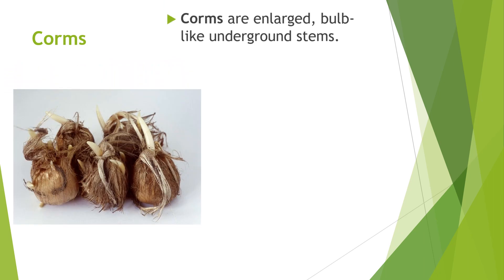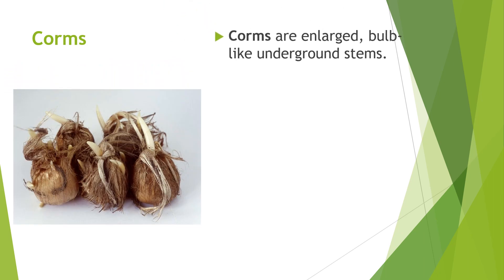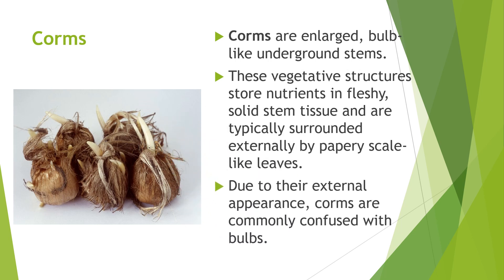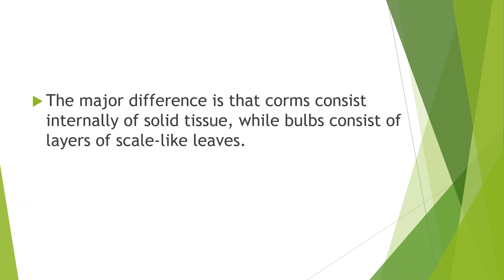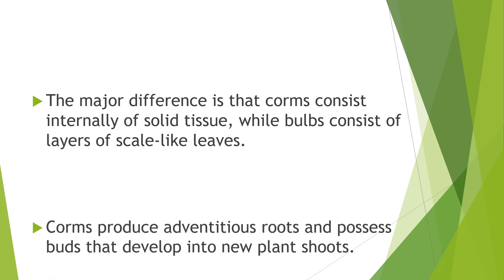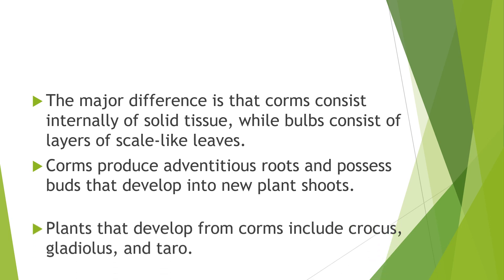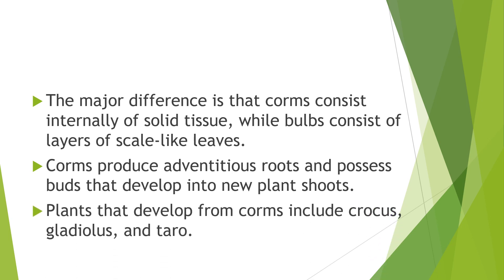Corms are enlarged, bulb-like underground stems. These vegetative structures store nutrients in fleshy, solid stem tissue and are typically surrounded externally by papery, scale-like leaves. Due to their external appearance, corms are commonly confused with bulbs. The major difference is that corms consist internally of solid tissue, while bulbs consist of layers of scale-like leaves. Corms produce adventitious roots and possess buds that develop into new plant shoots. Plants that develop from corms include crocus, gladiolus, and taro.